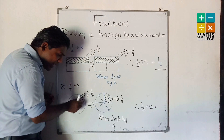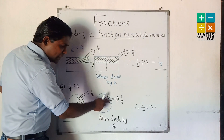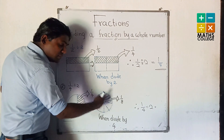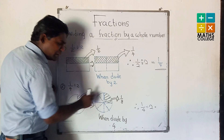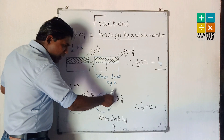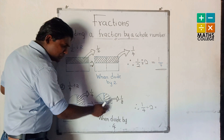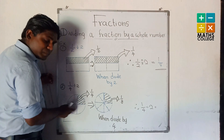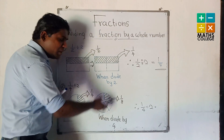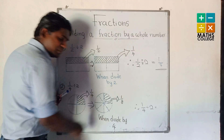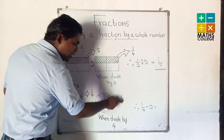When we divide this part into 2 parts, what happens? Counting the whole figure: 1, 2, 3, 4, 5, 6, 7, 8. Because when we divide this shaded part into 2 parts, the other 3 parts also each divide into 2. Now the denominator — how many whole parts? 8. Whole parts 8, shaded part 1. So the answer is 1/8.